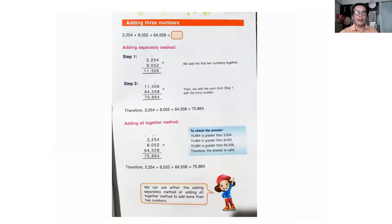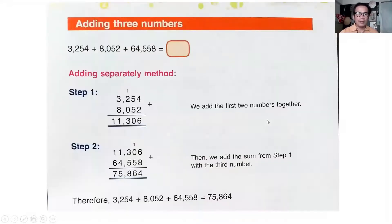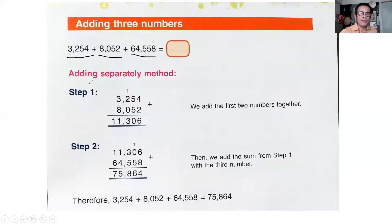Now let's go to adding three numbers — it's on page 19. So there are three addends. Step one: combine first the first and the second addend. Four plus two is six, five plus five is ten carry one, one plus two is three, three plus eight is eleven. You answer this first.